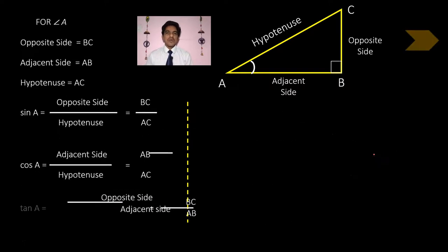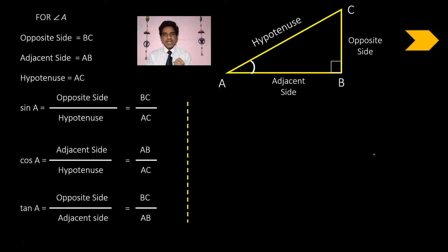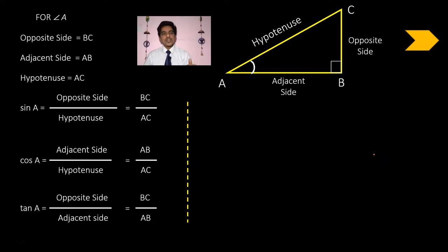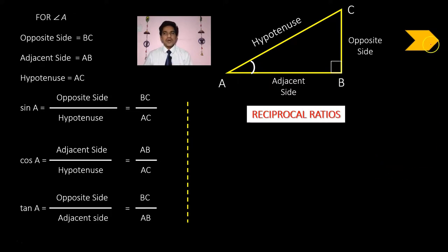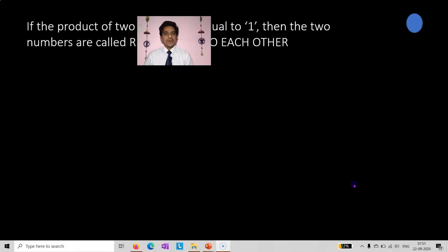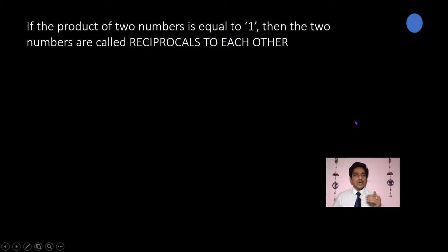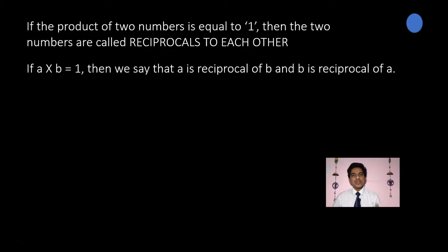Now we need to write the reciprocal ratios. Let me recollect: if the product of two numbers equals one, then the two numbers are called reciprocals of each other. For example, if a × b = 1, then a is the reciprocal of b and b is the reciprocal of a.